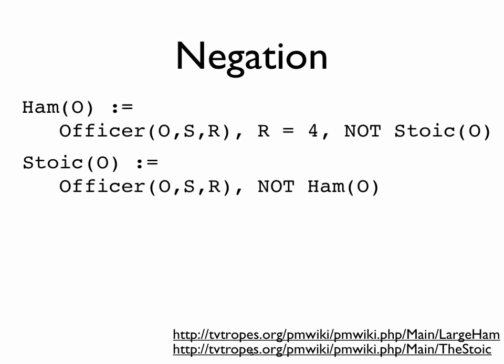When evaluating stoic, you need to know what ham is. But when you evaluate ham, you need to know what stoic is, and so on — you get into an infinite loop. If you want to evaluate the entire thing top-down, that's what would happen. A bottom-up strategy would similarly lead to either an infinite loop or an incorrect answer.